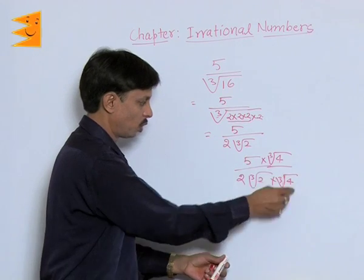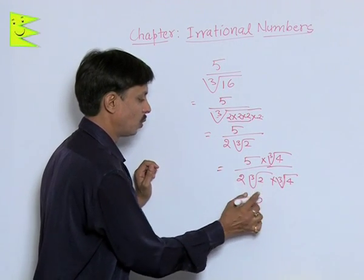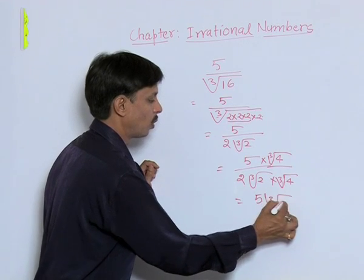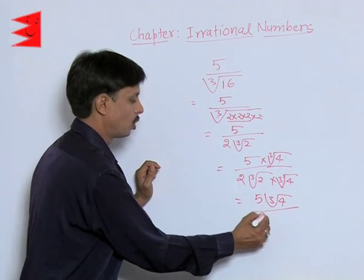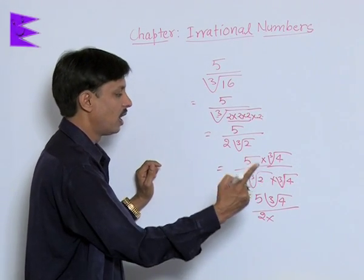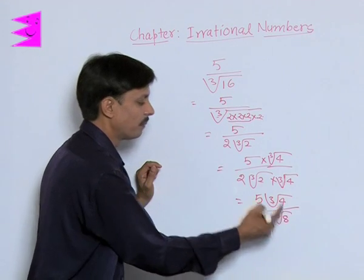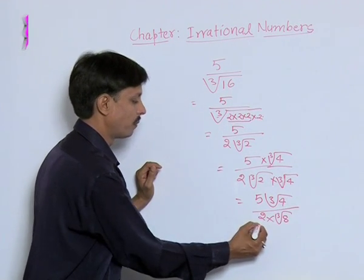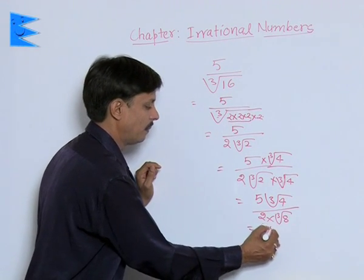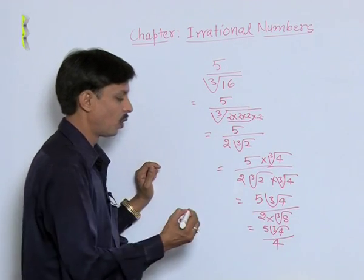Cube root of 4 into cube root of 4 gives me 5 into cube root of 4 divided by 2 into cube root of 2 into cube root of 4 become cube root of 8 and cube root of 8 can be said as a number 2. Answer comes 5 cube root of 4 upon 2 into 2 which becomes 4.